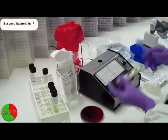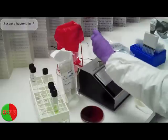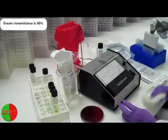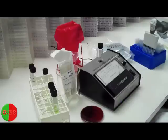Suspend the cells in the inoculating fluid and check the turbidity for the desired transmittance of 95%. Again, place the tube in the meter with the label facing forward.